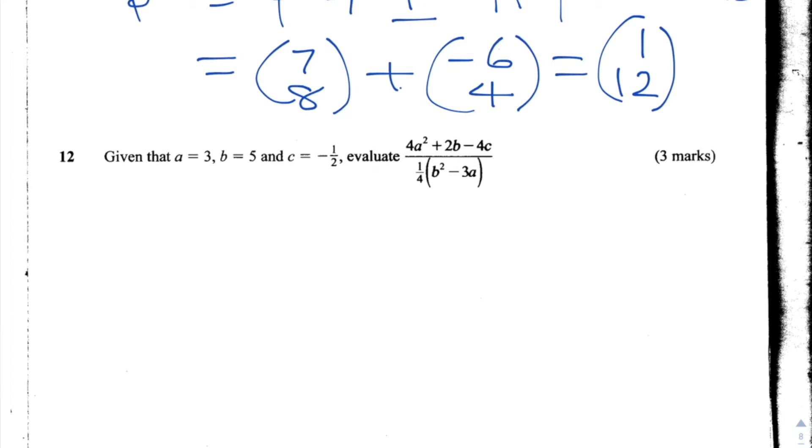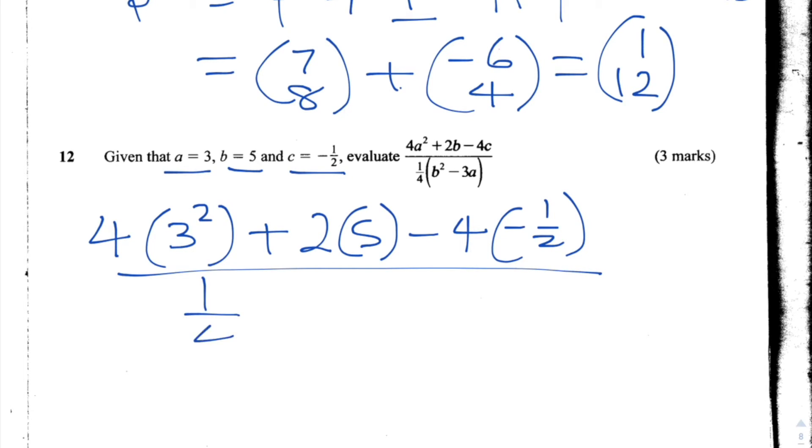Question 12 is an algebra question. It says, given that a equals 3, b equals 5, and c equals minus 1/2, evaluate (4a² + 2b - 4c) ÷ (1/4) × (b² - 3a). So what we're going to do is rewrite this expression and substitute in the values that we have for a, b, and c. So let's rewrite this as 4 multiplied by 3² plus 2 times 5 minus 4 times -1/2 divided by 1/4 multiplied by 5² minus 3 times 3.